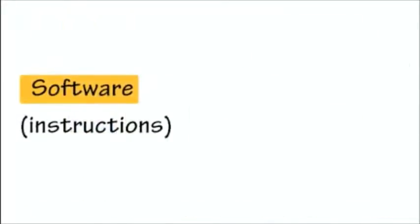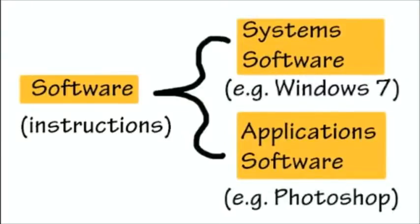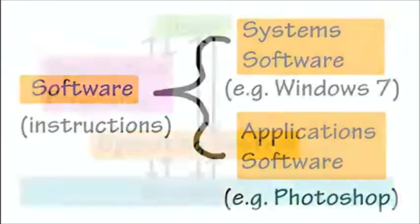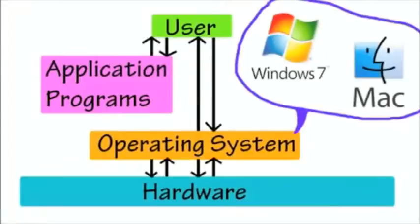Software includes all the programmed instructions in a computer. There is the main program called the system software, also known as the operating system, which controls and interacts with the hardware and software components.